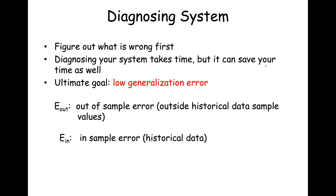What is generalization error? Out-of-sample error concerns the error your pattern recognition system makes on examples outside of the historical data — data values your system has not yet seen. We call that out-of-sample error, or E out. In-sample error, E in, is the error associated with the historical data as your learning algorithm tries to find a hypothesis that mimics the ground truth target function. That error on the historical data is called in-sample error.